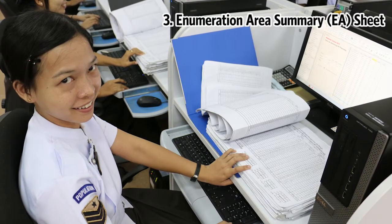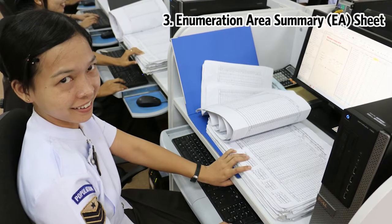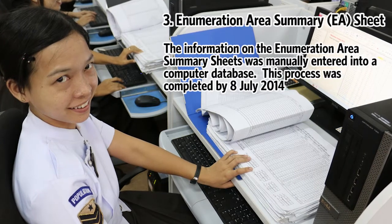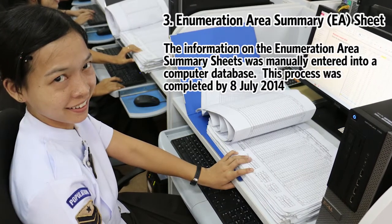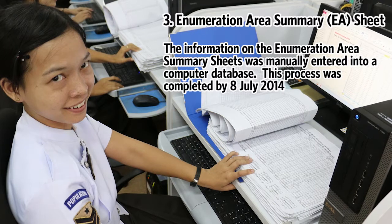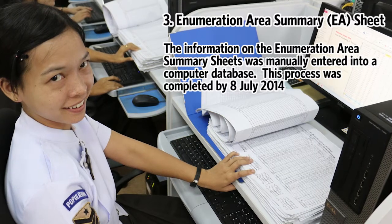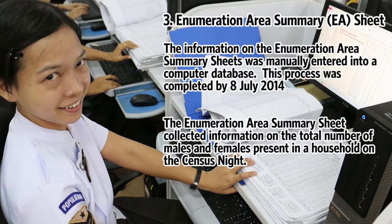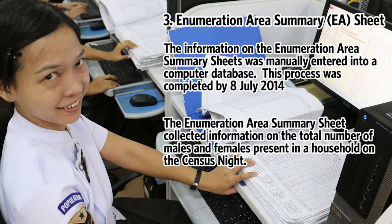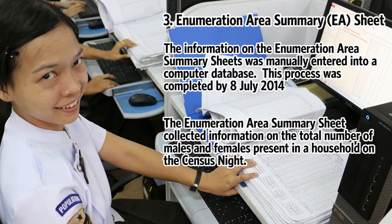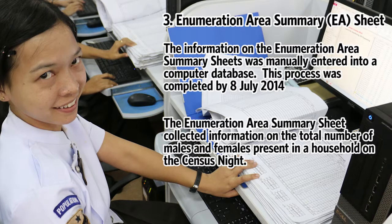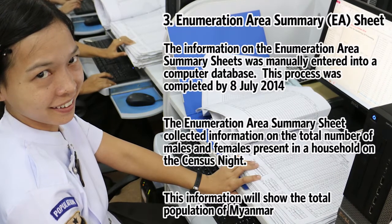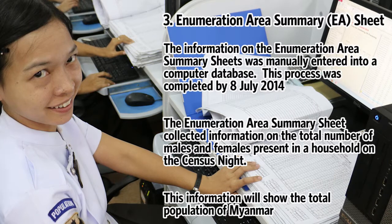Enumeration Area Summary. The information on the Enumeration Area Summary Sheets was manually entered into a computer database. This process was completed by 8 July 2014. The Enumeration Area Summary Sheet collected information on the total number of males and females present in a household on the census night. This information will show the total population of Myanmar.